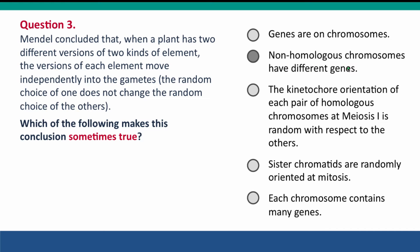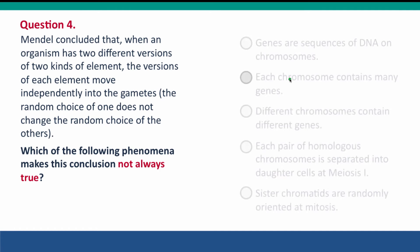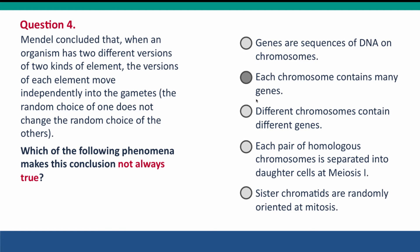What we now call non-homologous chromosomes have different genes and they move independently when the cell divides. And finally, question four uses the same statement but asks: which phenomenon makes that conclusion not always true? It was true in Mendel's experiments for the cases he studied, but it's not always true. The answer is that sometimes different genes — alleles of different genes — don't move independently because those genes are on the same chromosome. Each chromosome contains many genes, so it's often the case that two different genes are on the same chromosome and don't move independently into daughter cells.